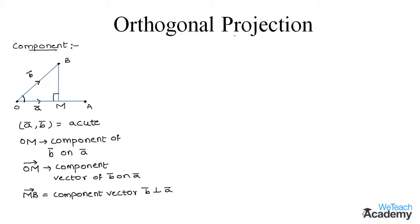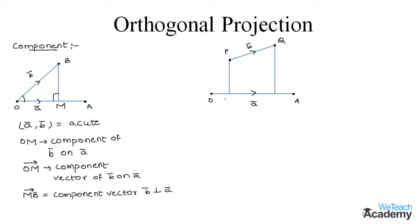Now let us learn about orthogonal projection. Consider two line segments: line segment OA and line segment PQ. The length of vector OA is A bar and the length of vector PQ is B bar. The plane passing through points PQ and perpendicular to A bar intersects line OA at two points L and M. The vector LM is called the orthogonal projection of B bar on A bar.